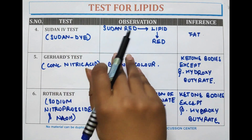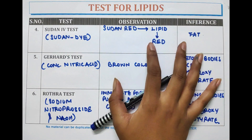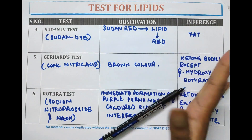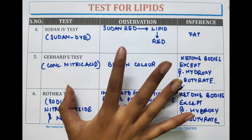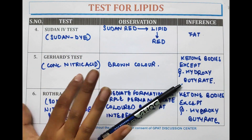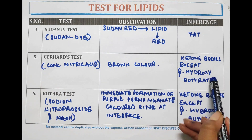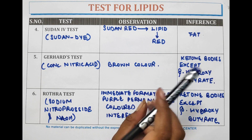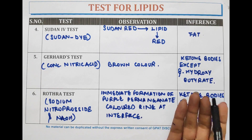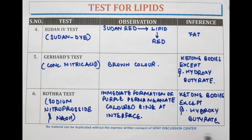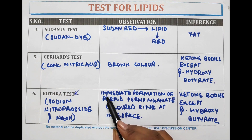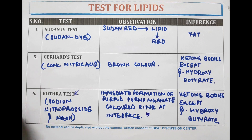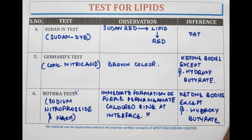To recap: the Sudan IV test is done for identification of fats; Sudan dye is a lipid-soluble, red-colored dye that converts lipid or fat in the sample to red color. The Gerhard test is performed for ketone bodies except beta-hydroxybutyrate, using concentrated nitric acid; brown color indicates presence of ketone bodies. The Rothera test is also performed for ketone bodies except beta-hydroxybutyrate, using sodium nitroprusside and ammonia; immediate formation of a purple permanganate-colored ring at the interface indicates presence of ketone bodies. That's it — thank you for watching this video.